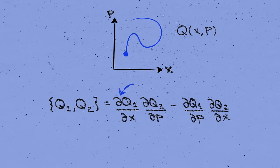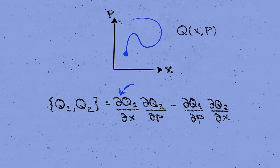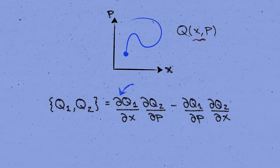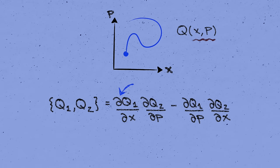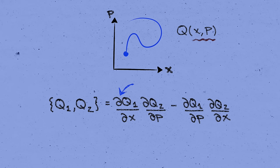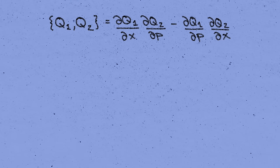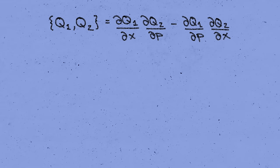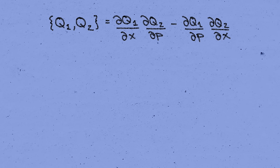I'm using partial derivatives here because q1 and q2 depend on two variables, x and p, in general. The partial derivative symbol just means that we differentiate with respect to each variable independently. Well, that looks a little odd, so let's quickly get at some specific examples to find out why the heck this thing is useful.